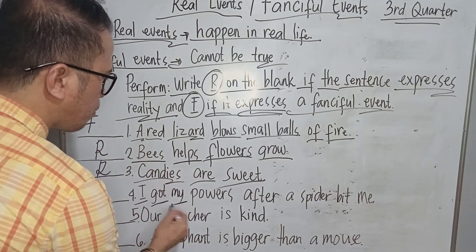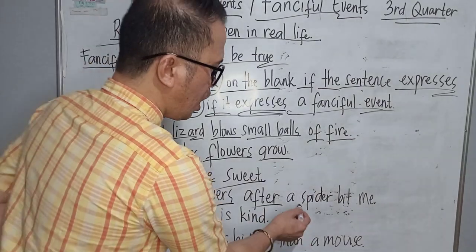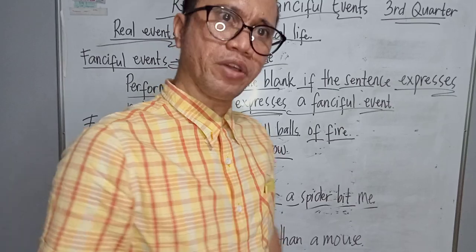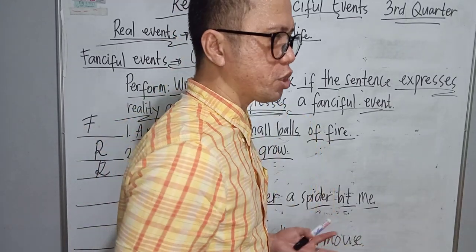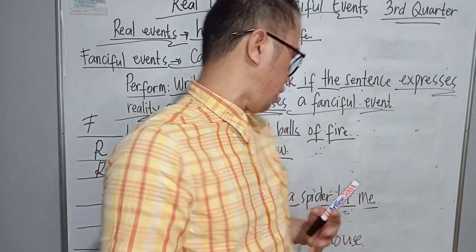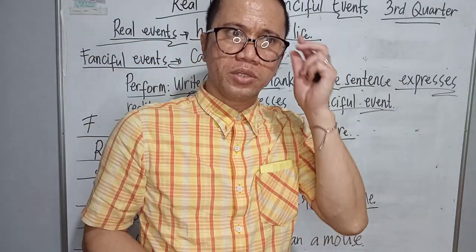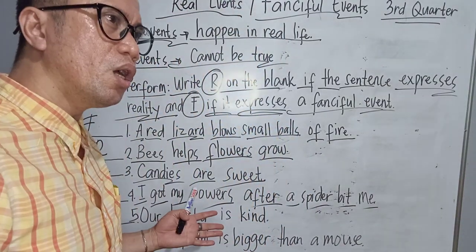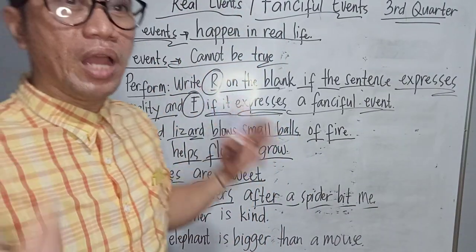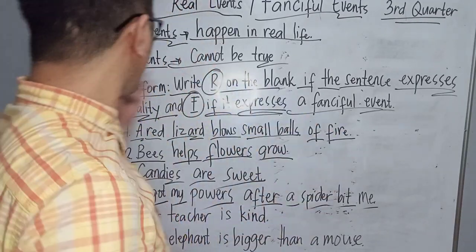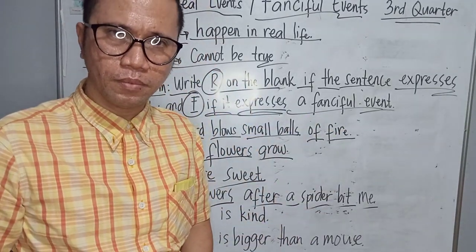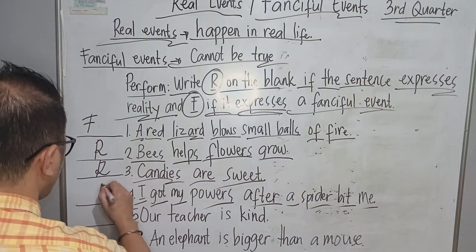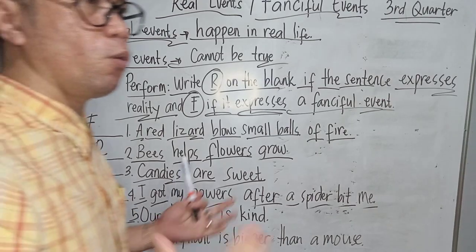Number four: I got my powers after a spider bit me. Try to think about it — once a spider bites you, you transform and get powers. Do you think that statement is correct? Does it happen in real life, or is it something that cannot be true, which is a fanciful event? So we are going to write letter F — it is the fanciful one.